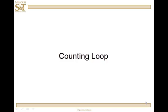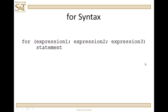We're going to take a look at the counting loop. In C++ there's only one counting loop, and that is the for statement. The syntax is: for, and in parentheses expression one, expression two, expression three — with semicolons separating them. Not colons, not commas — semicolons. And then a statement.